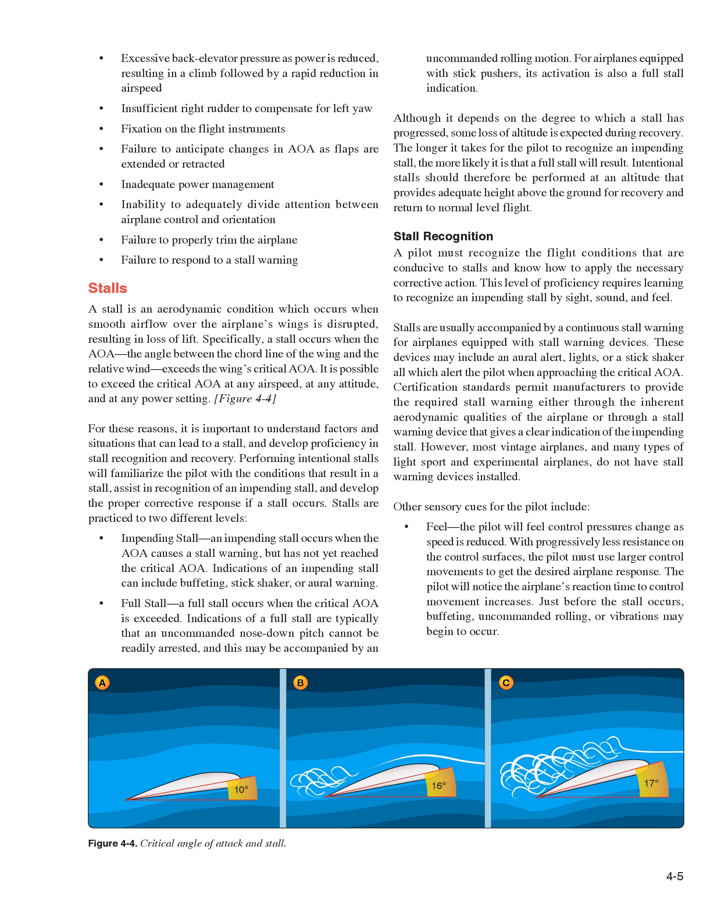Stalls are practiced to two different levels. An impending stall occurs when the AOA causes a stall warning but has not yet reached the critical AOA. Indications of an impending stall can include buffeting, stick shaker, or aural warning. A full stall occurs when the critical AOA is exceeded. Indications of a full stall are typically an uncommanded nose-down pitch that cannot be readily arrested, which may be accompanied by an uncommanded rolling motion. Although it depends on the degree to which a stall has progressed, some loss of altitude is expected during recovery. The longer it takes for the pilot to recognize an impending stall, the more likely it is that a full stall will result.